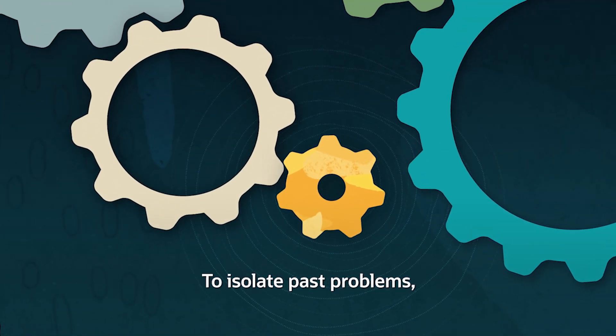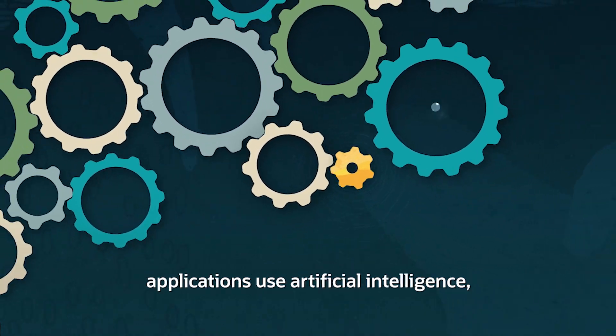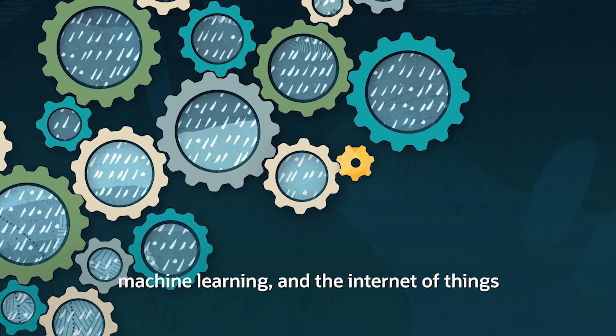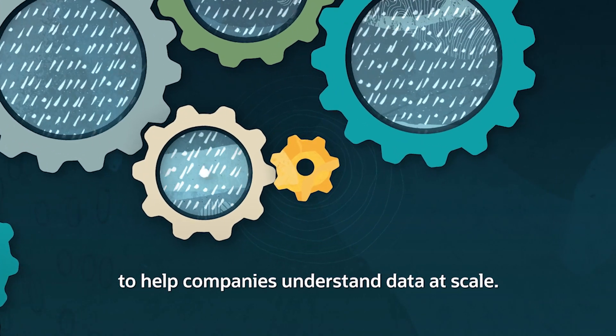To isolate past problems, Oracle's supply chain and manufacturing applications use artificial intelligence, machine learning, and the Internet of Things to help companies understand data at scale.